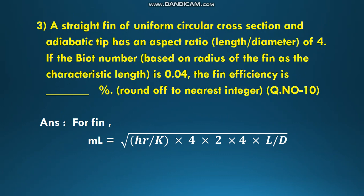A straight fin of uniform circular cross section and adiabatic tip has an aspect ratio of 4. If the Biot number based on the radius of the fin as the characteristic length is 0.04, the fin efficiency should be found out in terms of percentage. A straight fin is there which is of uniform cross section and adiabatic tip.